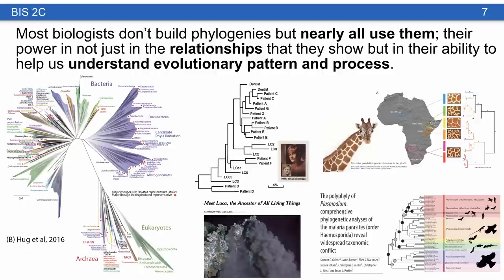Most biologists really don't build phylogenies, but nearly all biologists use them. We spend some time, especially in lab, talking about building phylogenies using parsimony. In lecture this is usually reduced because modern methods require sophisticated statistics. Phylogenies have great power — not just in the relationships they show, like the Hug et al. phylogeny we've used throughout the quarter, which gives us a framework of the tree of life — but also in helping us understand evolutionary pattern and process.